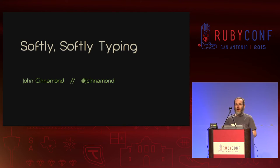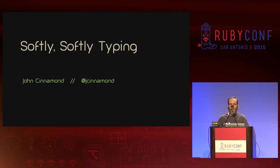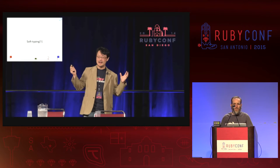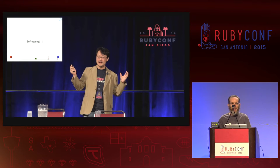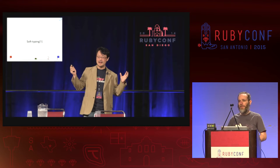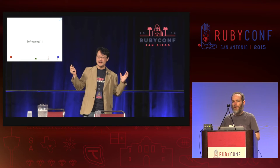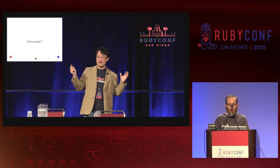This is a talk about soft typing. Soft typing is something that Matz spoke about at RubyConf last year, and he spoke about it as one of the possibilities for Ruby 3. So, what is soft typing?